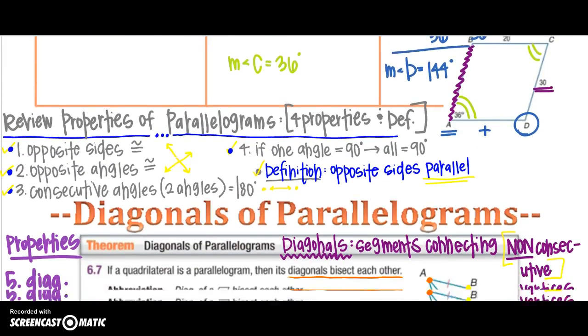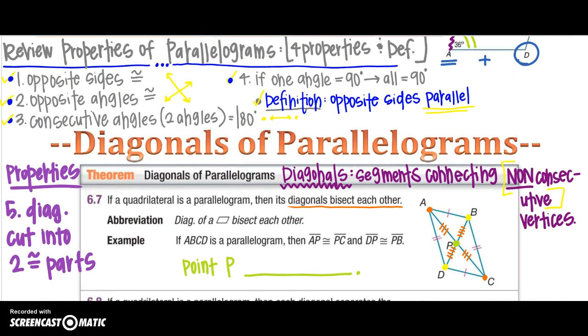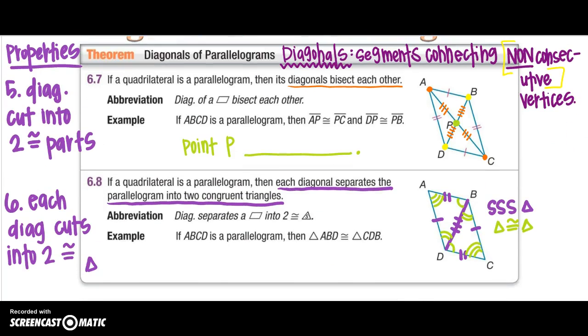Then we did a couple practice problems and then we went to their diagonal. So property number 5, diagonals are cut into two congruent parts or they are bisected. And number 6, each diagonal, when it is created, it cuts the parallelogram into two congruent triangles.